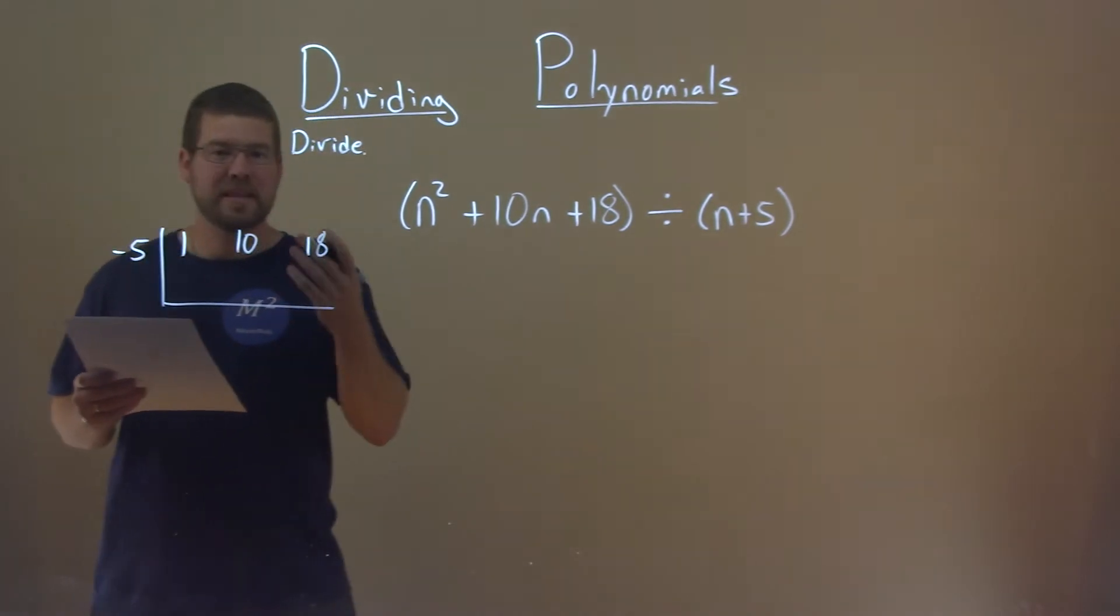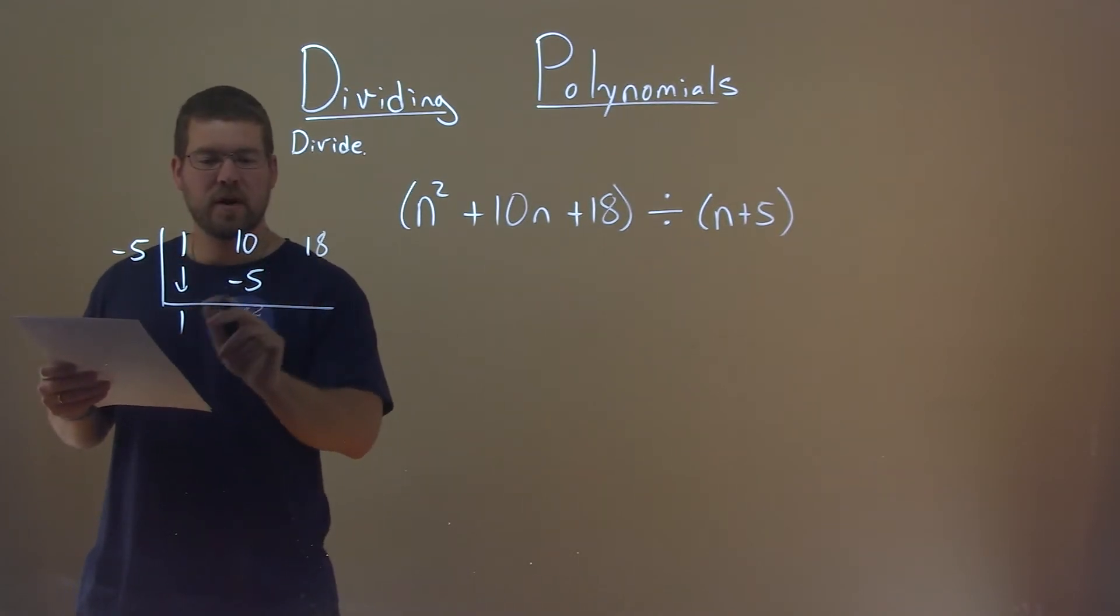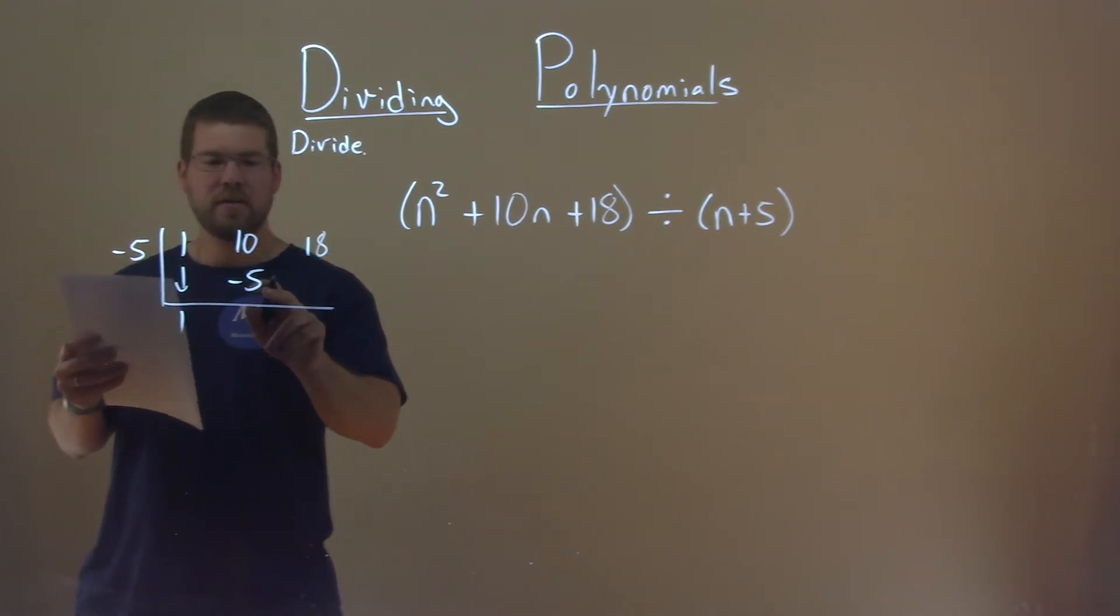And now we're going to do synthetic division. We bring down the 1, and now we multiply. Negative 5 times 1, negative 5 right there. 10 plus a negative 5 is a positive 5.